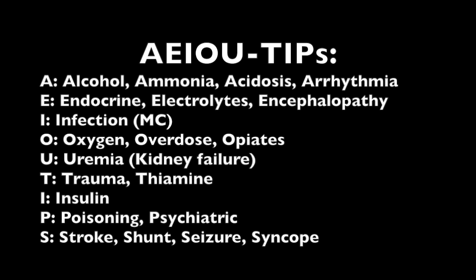The A stands for alcohol, ammonia — which is that buildup from liver failure — acidosis, and arrhythmias. E stands for endocrine abnormalities, electrolyte abnormalities, or any type of encephalopathy. I stands for infection, which is the most common cause. O stands for oxygen, opiates, or overdose. U stands for uremia, or kidney failure. T stands for trauma or thiamine, which can be deficient in liver failure. I stands for insulin, covering endocrine abnormalities in diabetics. P stands for poisoning, which covers overdose, and P also stands for psychiatric problems. S stands for stroke, shunt, seizures — including post-ictal state — or syncope.